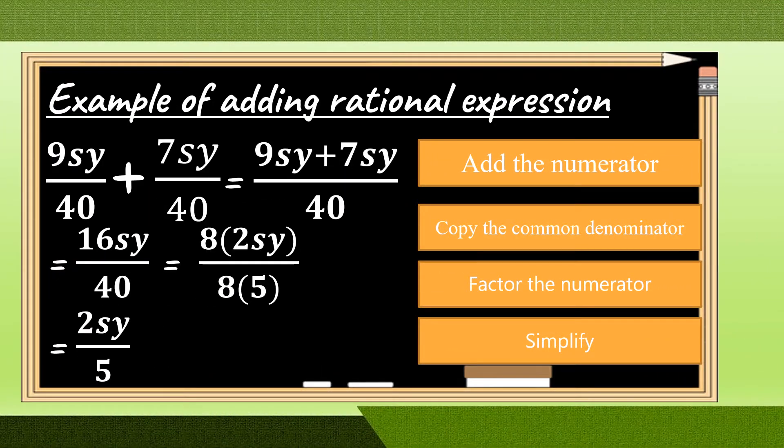Alright, let's have an example. 9SY over 40 plus 7SY over 40 is equal to 9SY plus 7SY over 40. Add the numerator, then copy the common denominator.